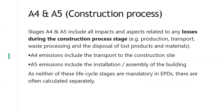The next stages are the construction process. During stages A4 and A5, we include any impacts related to any losses during the construction process — production, transport, waste processing, and disposal of lost products and materials. A4 is quite simple: we look at the quantities of materials being transported from the factory to the construction site. A5 includes all emissions related to the installation and assembly of the building — usually quite high in energy or fuel costs from different types of machinery. From an LCA point of view, A4 and A5 are not mandatory for manufacturers to report on, so an EPD from a steel or concrete manufacturer will usually be missing A4 and A5 data. They are therefore often calculated separately.